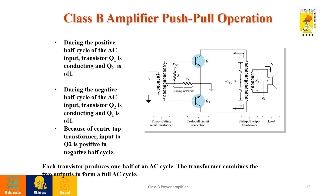During the positive half cycle of the input signal, transistor Q1 will conduct. Due to the center tap, the positive terminal is positive at Q1's base and negative at Q2's base. Q1 is an NPN transistor, so it is forward biased and conducts in the positive half cycle, whereas Q2 receives negative bias and does not conduct.